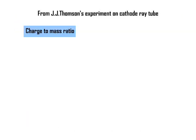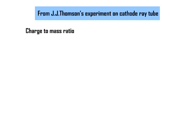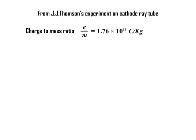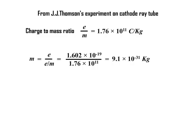We already know the charge to mass ratio of an electron in the experiment of J.J. Thomson with cathode ray tube. The ratio was 1.76 into 10 to the power 11 Coulomb per kg. From this, M equal to charge of an electron divided by charge to mass ratio which is equal to 1.602 into 10 to the power minus 19 divided by 1.76 into 10 to the power 11 which is equal to 9.1 into 10 to the power minus 31 kg which is the mass of an electron.